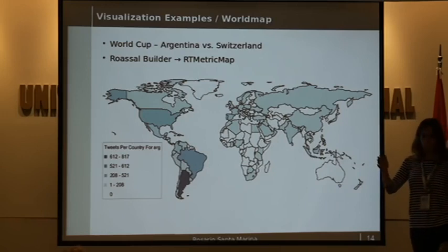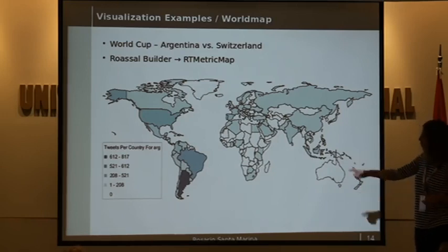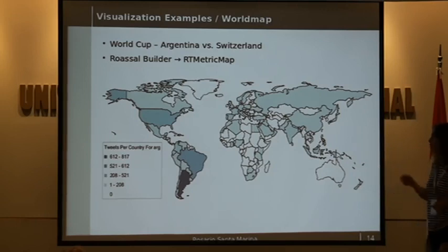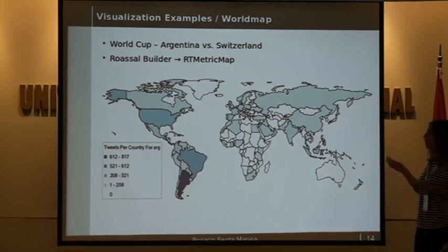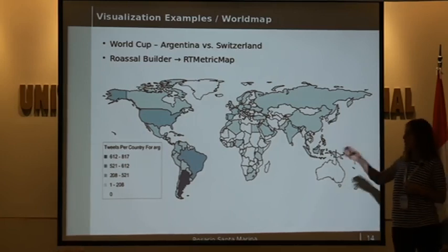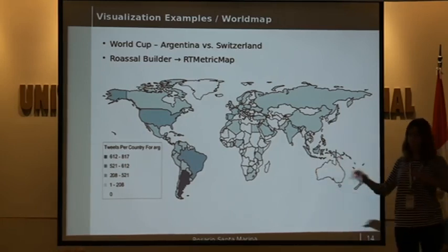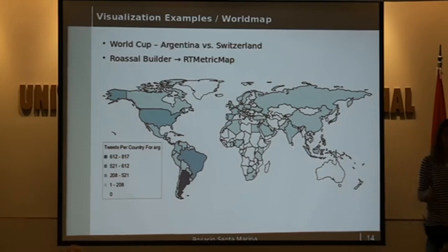These charts show the same information but in a different way. To do this, we use a range of colors that goes from dark blue to light blue. The difference between one and another is that in one case, you can easily see which is the country with most activity, and the other shows different aspects.